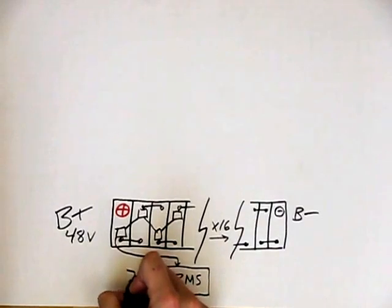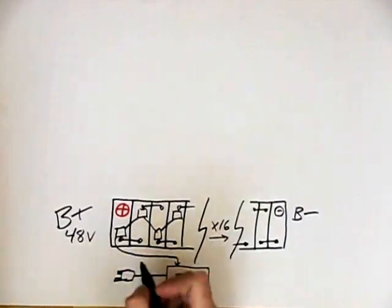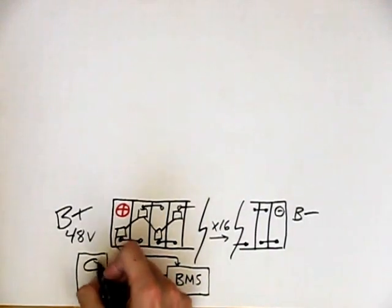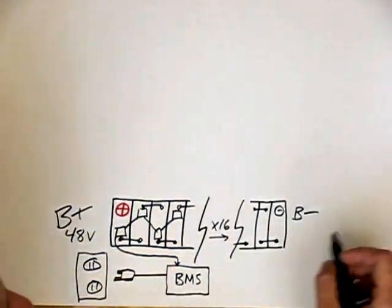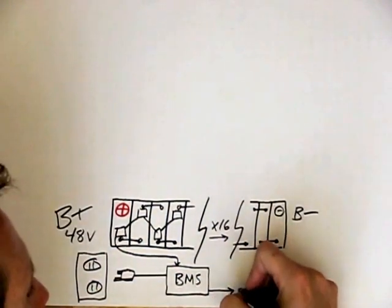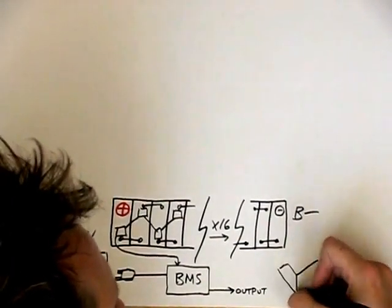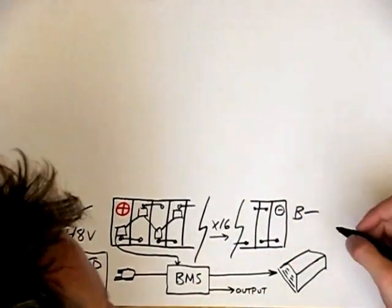The BMS control board is fed information from individual cell modules that go on the negative terminal of each cell. These modules are about as big as a postage stamp and are responsible for the actual monitoring. AC power from your wall outlet is routed through a relay that is powered by the BMS and to the charger.